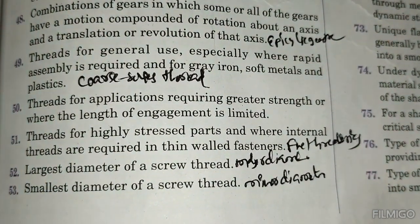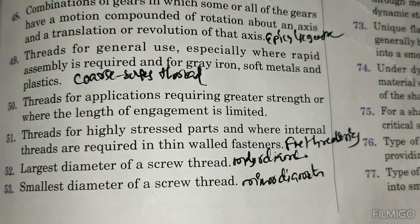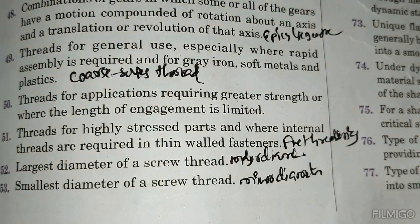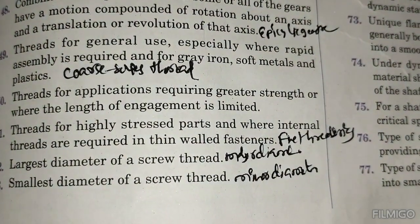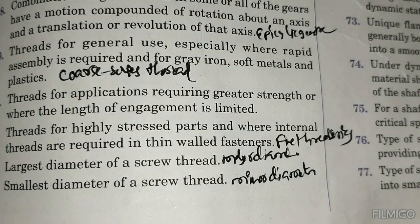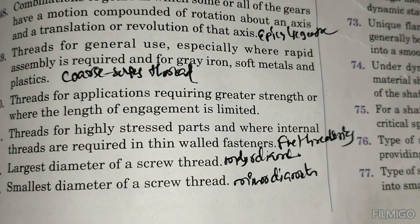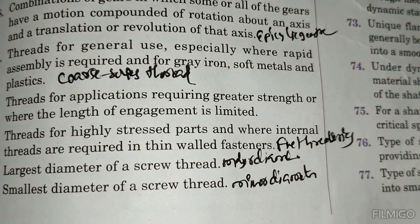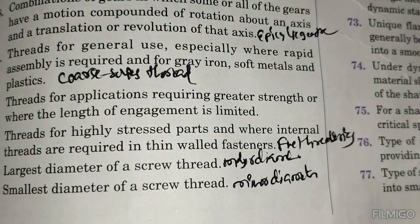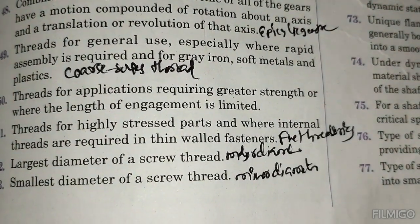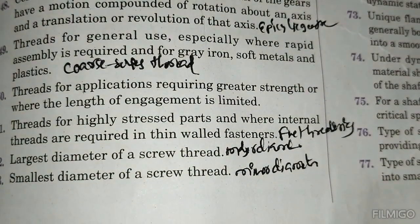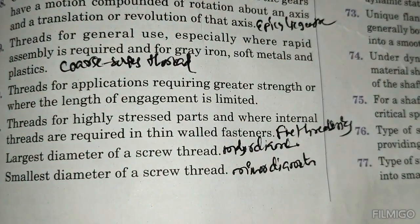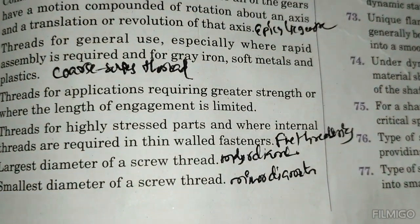Threads for highly stressed parts and where fine internal threads are required are fine thread series. The largest diameter of a screw thread is the major diameter. The smallest diameter of a screw thread is the minor diameter.